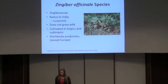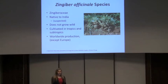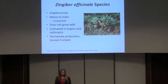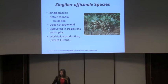The Zingiber officinale species of the Zingiberaceae family is a subtropical family that also includes turmeric and cardamom, which are other spices used in food preparation. It is native to India, though this is suspected since its use is essentially prehistoric and it does not grow wild — it is only cultivated. The rhizomes of ginger are the most important part of the harvest, and it is produced worldwide except in Europe and Antarctica.